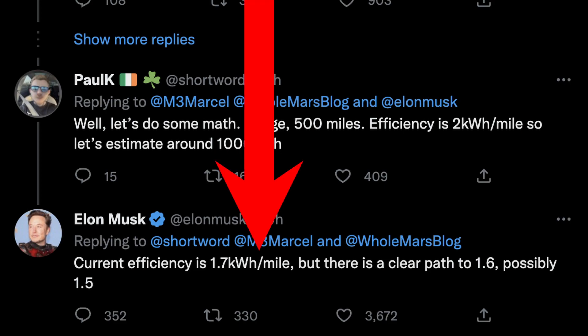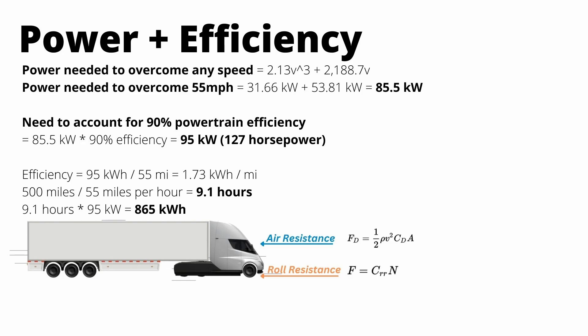He said that the semi is using about 1.7 kilowatt hours per mile. So I'm going to assume that that's actually calculated at 55 miles an hour, which is very close to the results we got here. In my opinion, an efficiency claim without a speed reference doesn't really mean a whole lot. If you've ever driven an EV, you've probably experienced this.